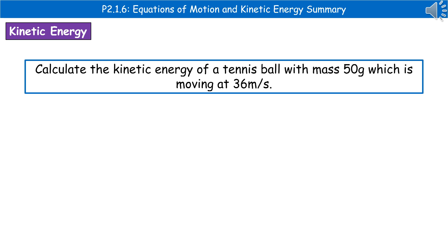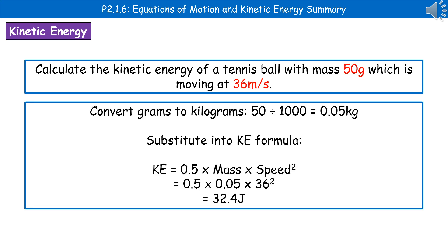So the kind of question that you could be asked about kinetic energy is given here. Calculate the kinetic energy of a tennis ball with mass 50 grams, which is moving at 36 meters per second. First thing to do, as always, in a calculation question is highlight, underline, circle, or jot down the key values from the question itself so that you don't have to keep rereading the whole thing. And I've done that in red at the top there.